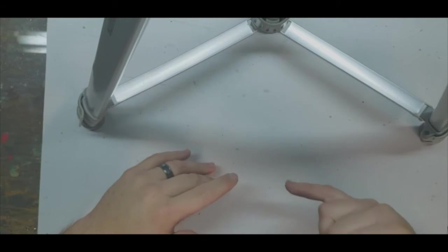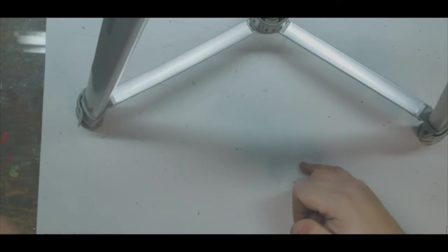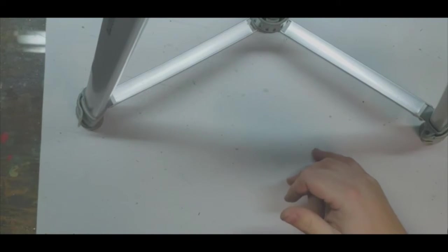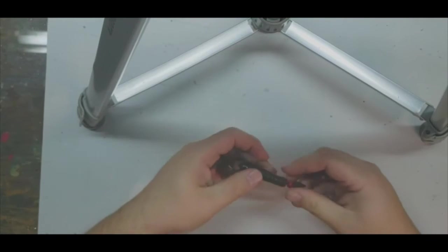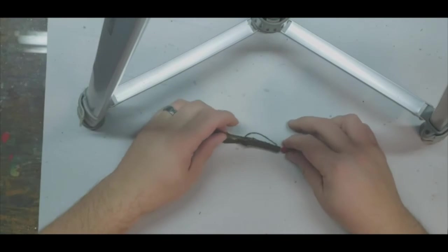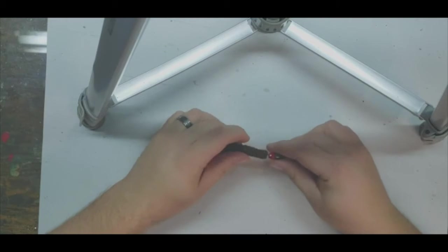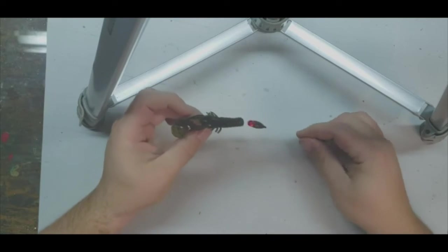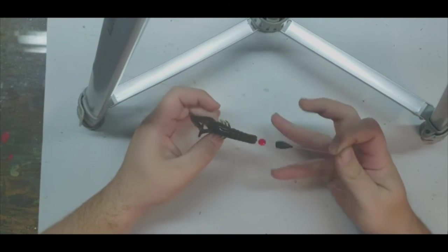The first thing I would be throwing if I ran up on a bedding fish is going to be a Texas rigged craw with a tungsten weight, bobber stop, and a glass bead.